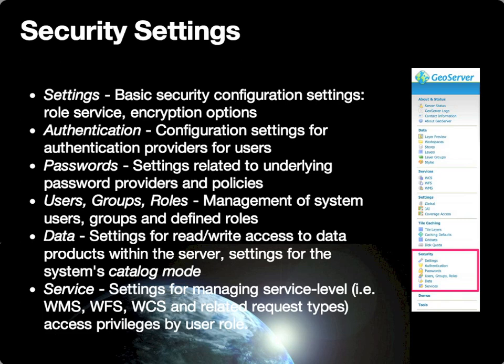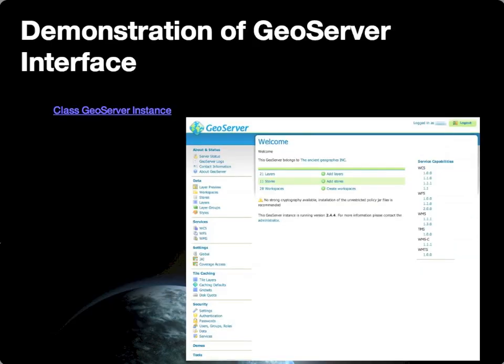Service security settings relate to the web map, web feature, and web coverage services, where access privileges are defined by user role. For example, you can specify that anonymous users can access web map services, but only authenticated users can access web feature or web coverage services. Later, we will go through a demonstration of the GeoServer interface. If you would like to look at the GeoServer instance we're using for the class, you can follow the link provided in the lecture notes and here in the slide.